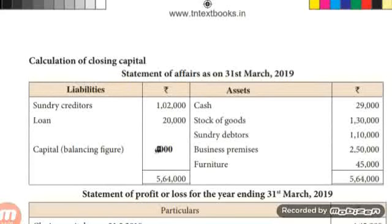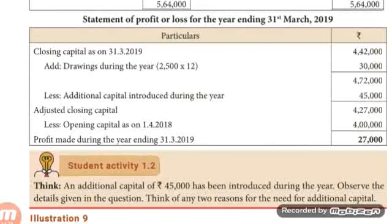Now calculate profit. Draw the statement of profit or loss for the year ending 31st March 2019. Start with closing capital = ₹4,42,000. Add drawings = ₹30,000; total = ₹4,72,000. Less additional capital introduced = ₹45,000. Adjusted closing capital = ₹4,27,000. Less opening capital = ₹4,00,000. The difference is ₹27,000, which is the profit for the year.